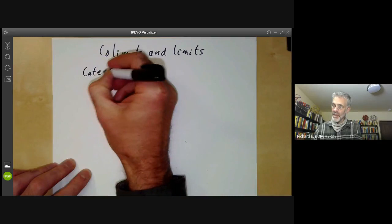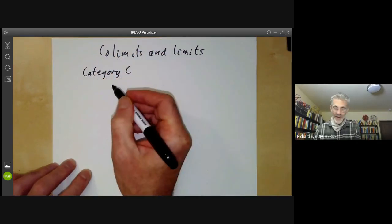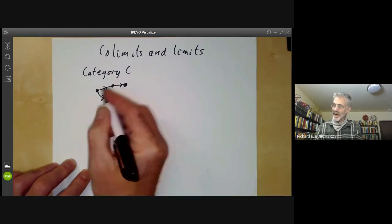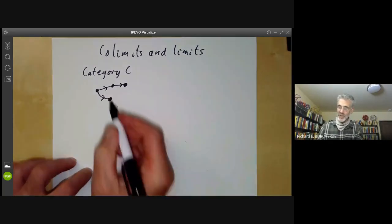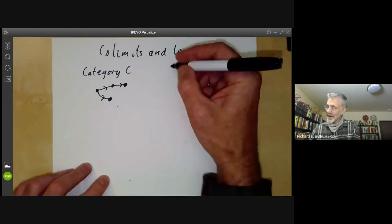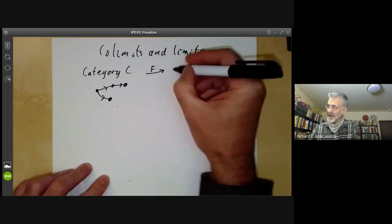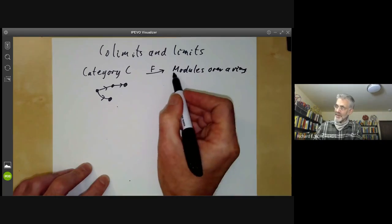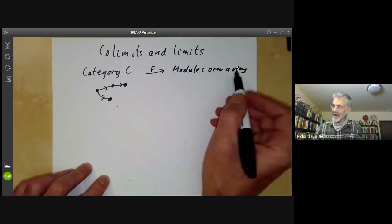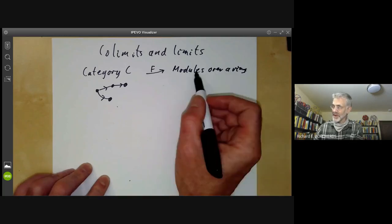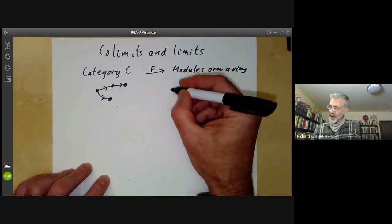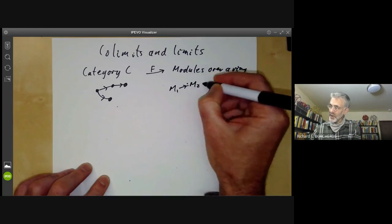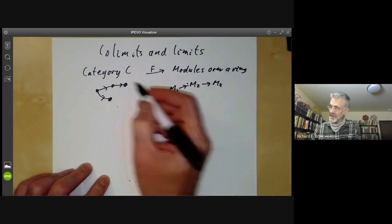For a co-limit, what we do is we take a category C. A category has some objects and some morphisms between them. I'll draw a picture of a category with four objects and a few morphisms between them drawn as arrows. We take a functor F from the category C to the category of modules over a ring, or more generally to any category, but we'll mostly be talking about co-limits and limits of modules over a ring. This means we choose a module for each object of the category, and we choose morphisms between the modules corresponding to morphisms of C.